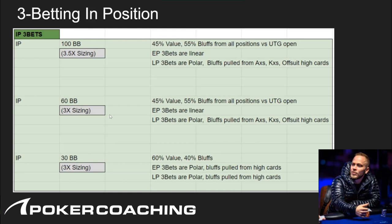Simply having high cards in short-SPR pots will be sufficient. A hand like king-queen off plays really nicely as a three-bet with short SPR — usually a king or a queen will be good. Things change a lot when you play 200 big blind poker: your bluffs are hands that can make massive hands rather than just pairs. For in-position 30 big blinds, we use 3x sizing again.